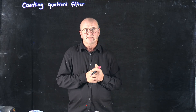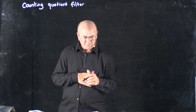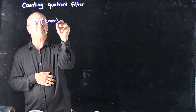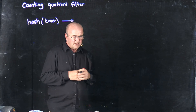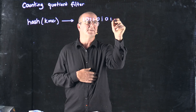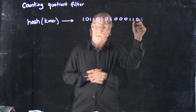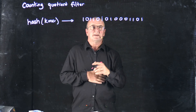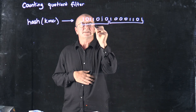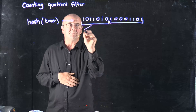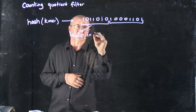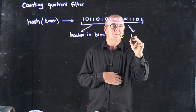The idea behind the counting quotient filter is that you have a hash function that takes your k-mers and gives you some result from the function. Then what you do is you take the high bits and the low bits and split them in two. The upper bits give you a location in your bins, and the lower bits give you the remainder.